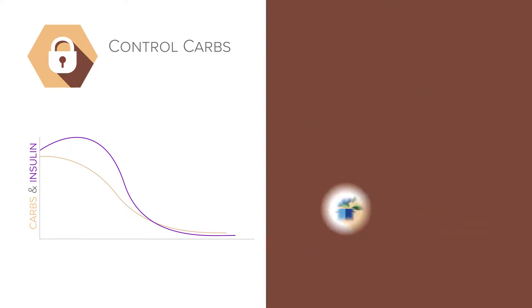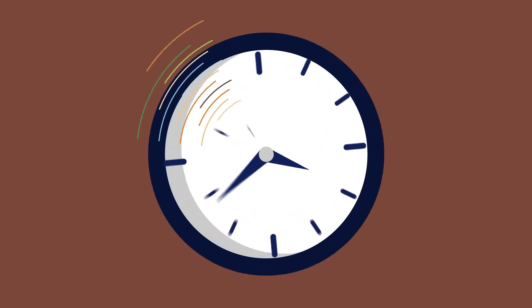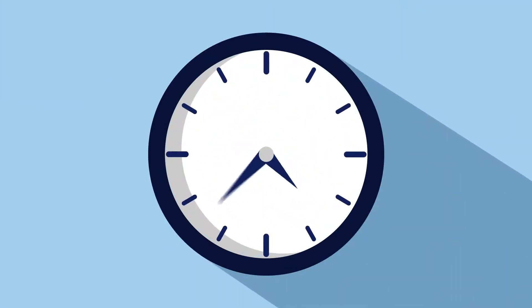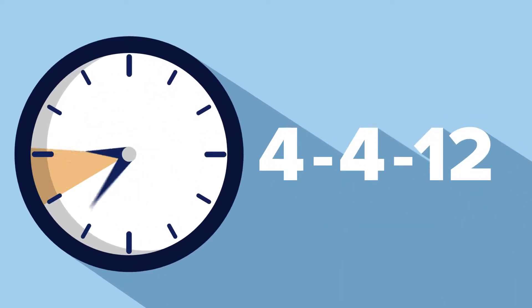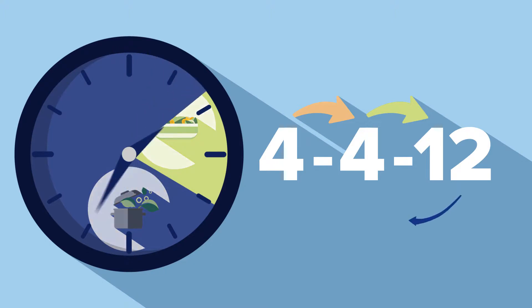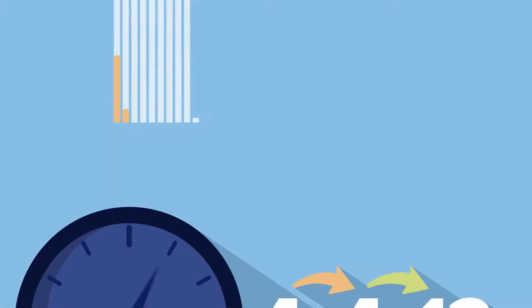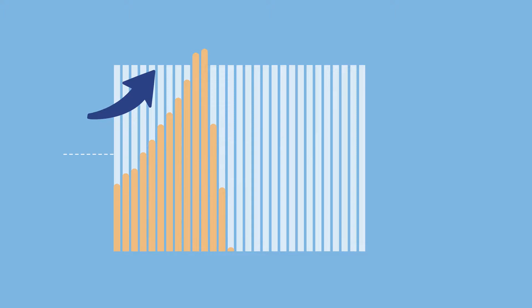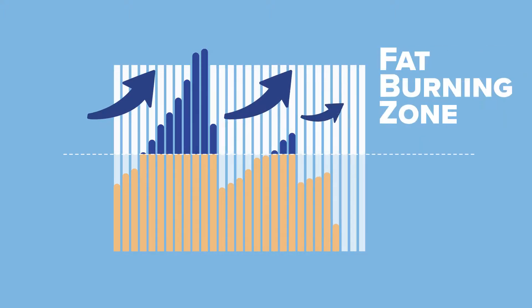In addition to following these principles, our bodies need time to allow insulin levels to recede. Unicity recommends a form of intermittent fasting we refer to as 4-4-12. By waiting 4-6 hours between breakfast and lunch, and lunch and dinner, and waiting 12-16 hours between dinner and breakfast with no snacking in between, we can give our bodies the time needed to get into what we call the fat burning zone.